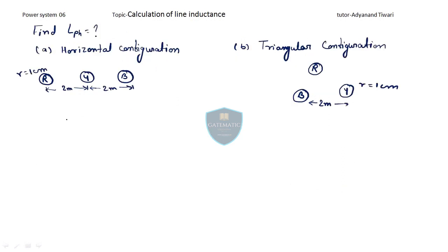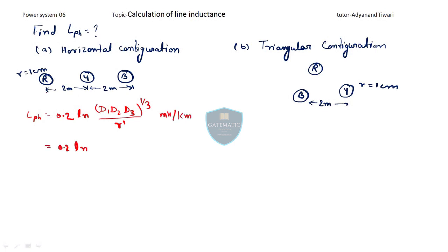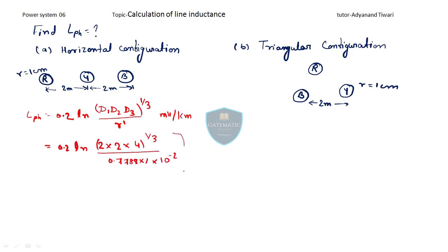Now we calculate inductance for two configurations. For horizontal configuration, using L_phase = 0.2 × ln[(D1·D2·D3)^(1/3) / R']: D1 = 2 m (R-Y), D2 = 2 m (Y-B), D3 = 4 m (R-B), and radius = 1 cm so R' = 0.7788 × 1 × 10⁻² m. The result is approximately 1.252 mH per km.